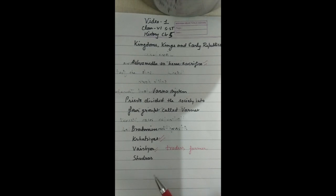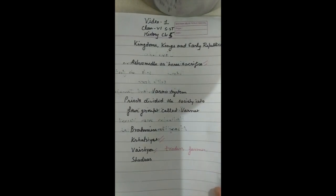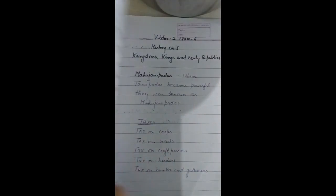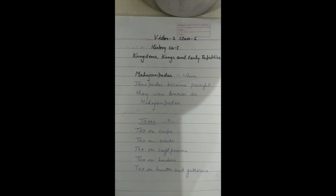The priests also said that these groups were decided on the basis of birth. For example, if one's father or mother were Brahmans, one could automatically become Brahman and so on.